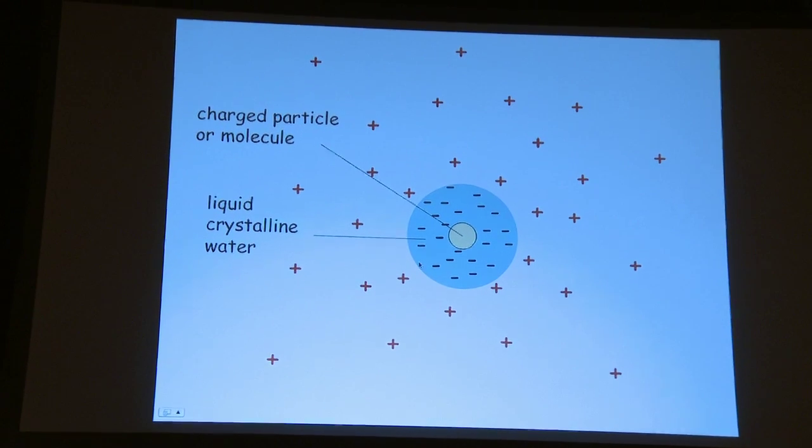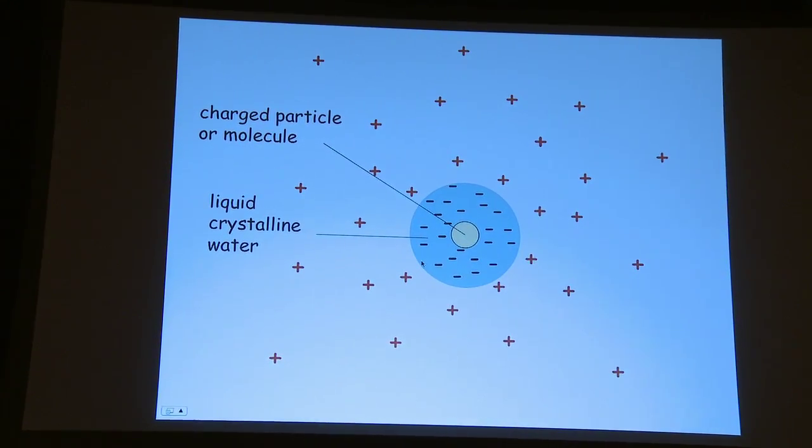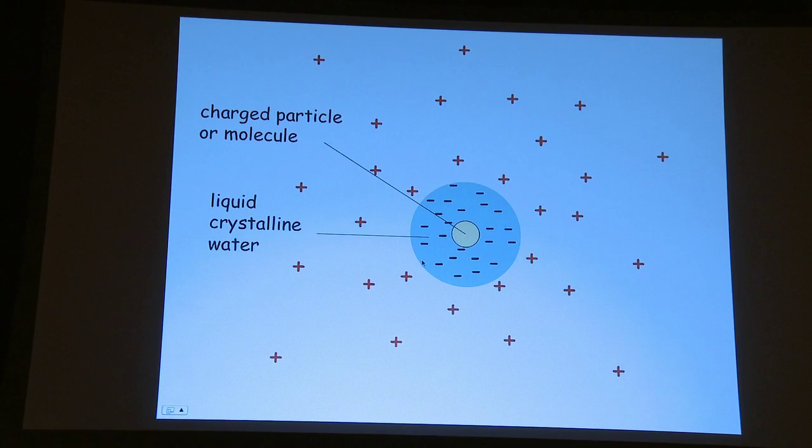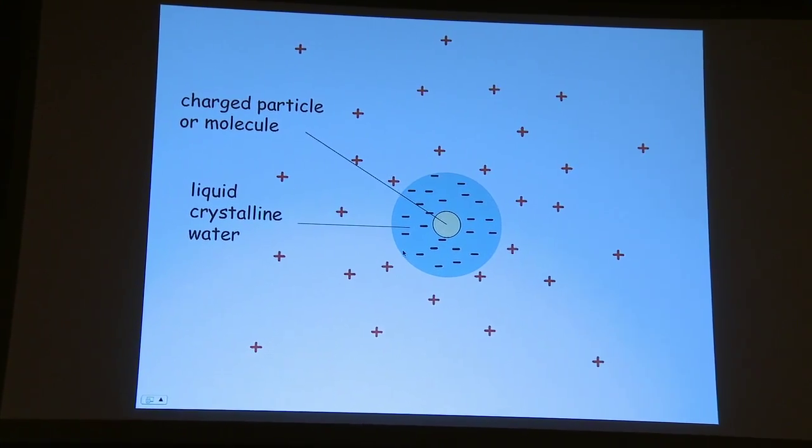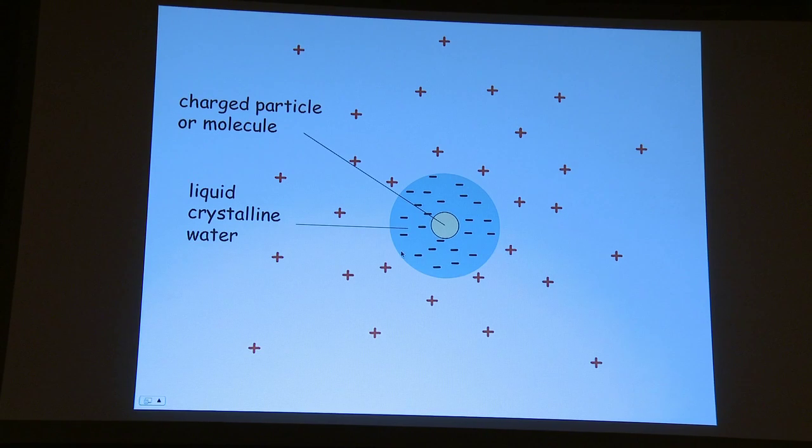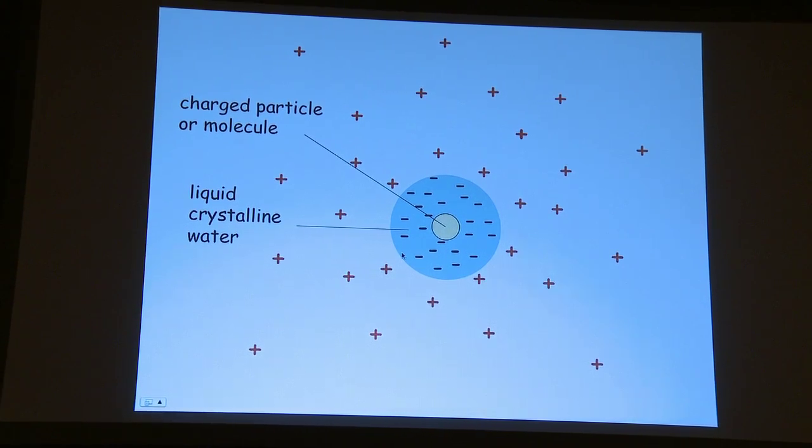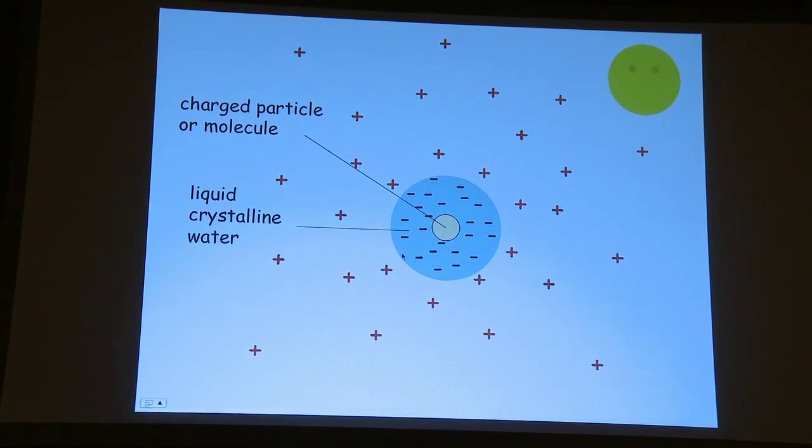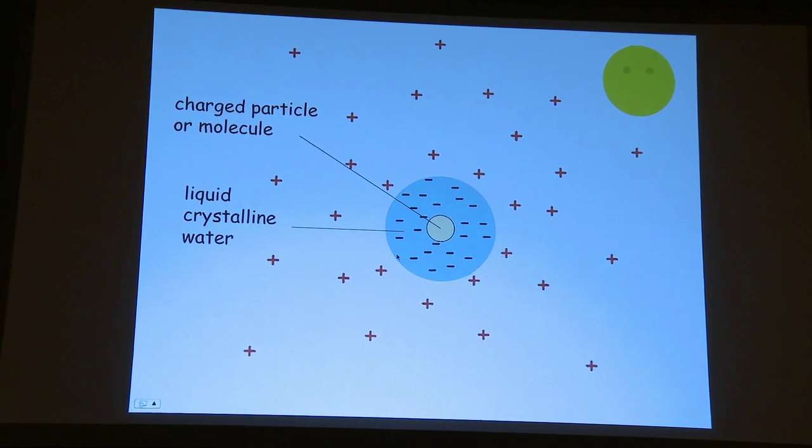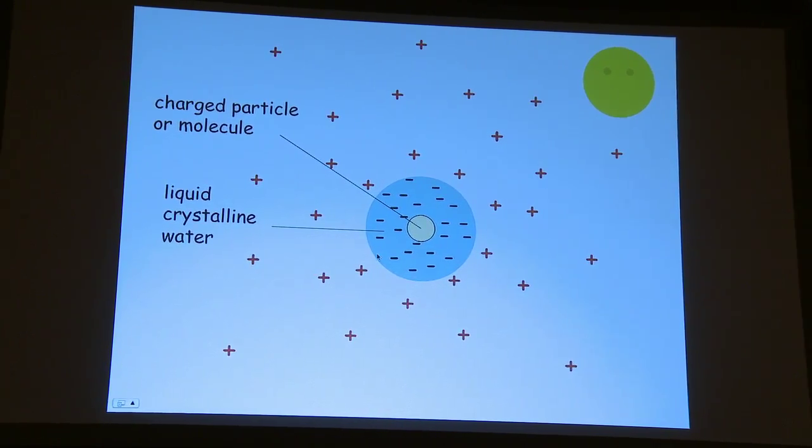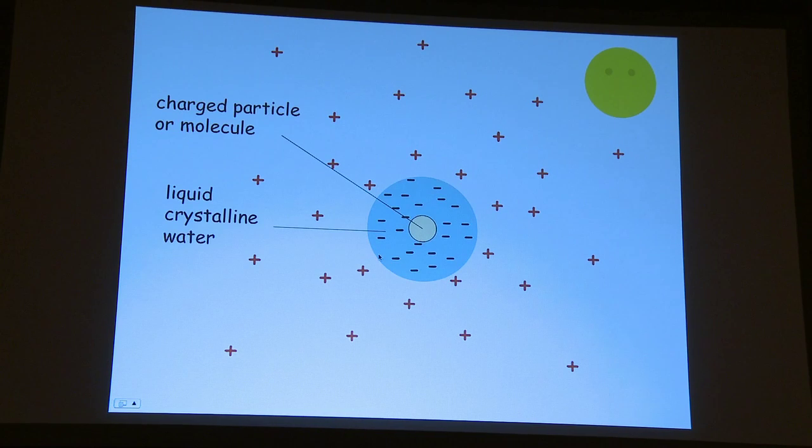I've shown you that if you put a charged particle or molecule in the water, that you get this big liquid crystalline water region around it that has negative charge and you have a lot of positive charge around it. And the sun plays a role or light plays a role in the charge separation and in the ordering.